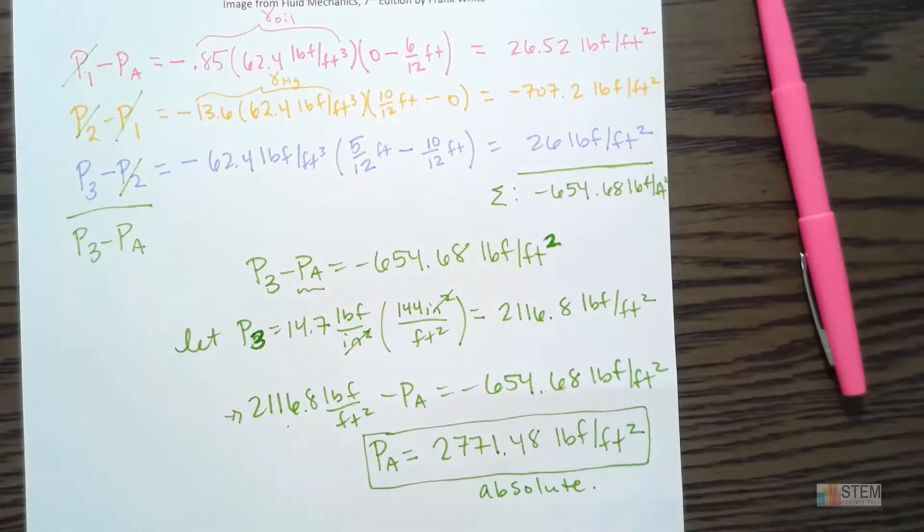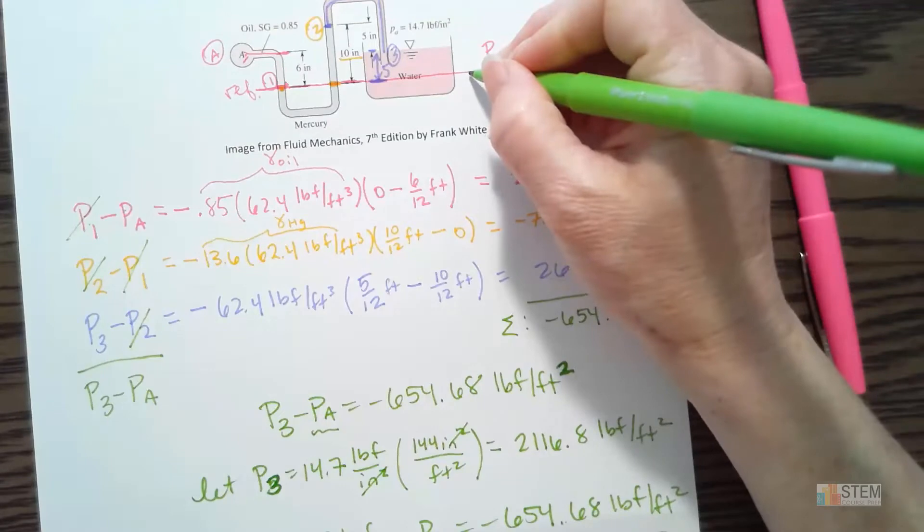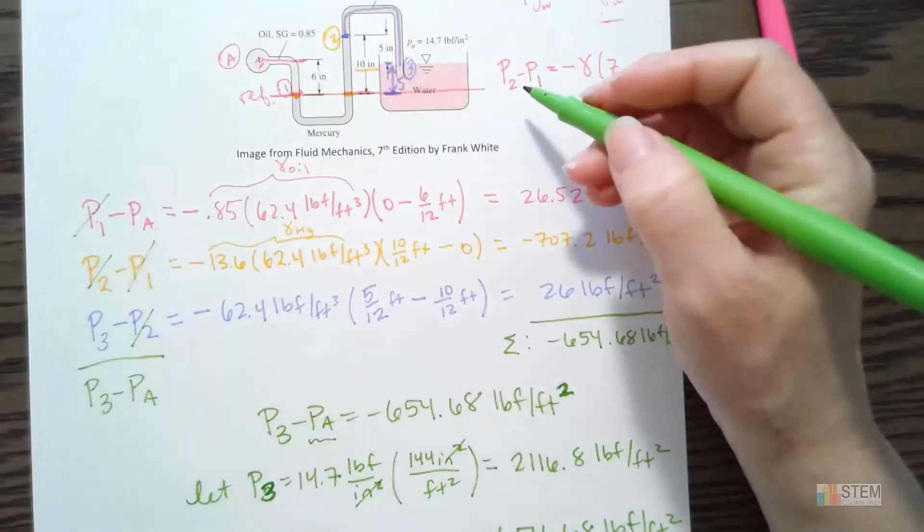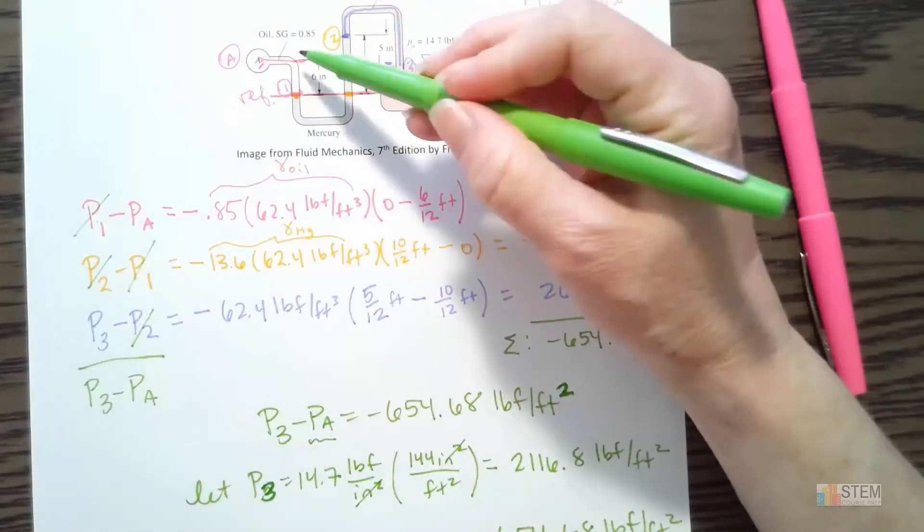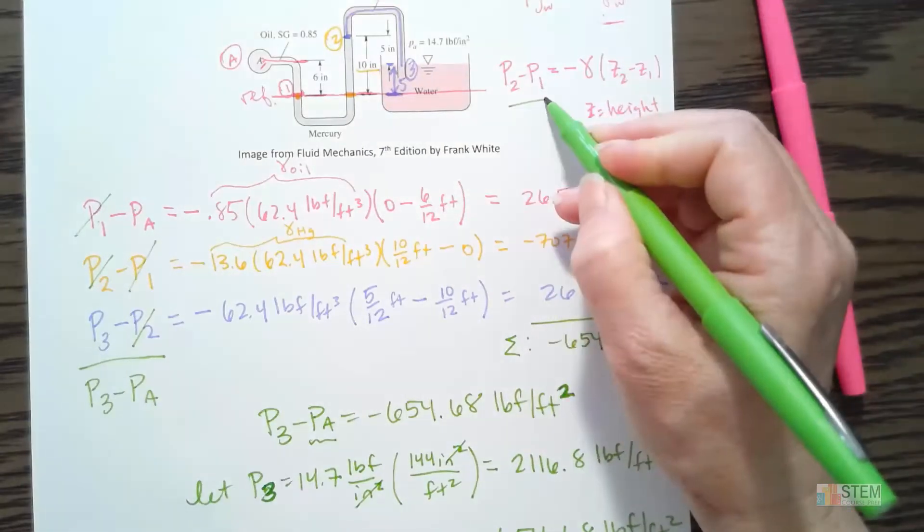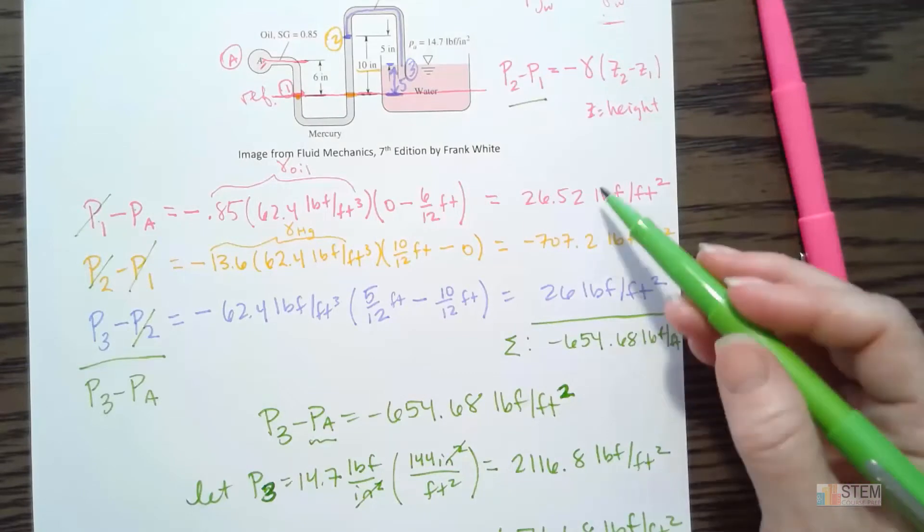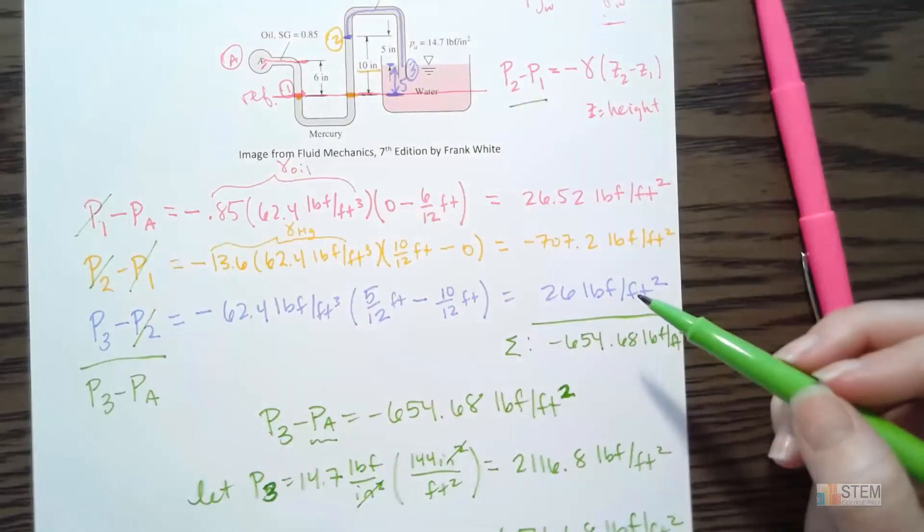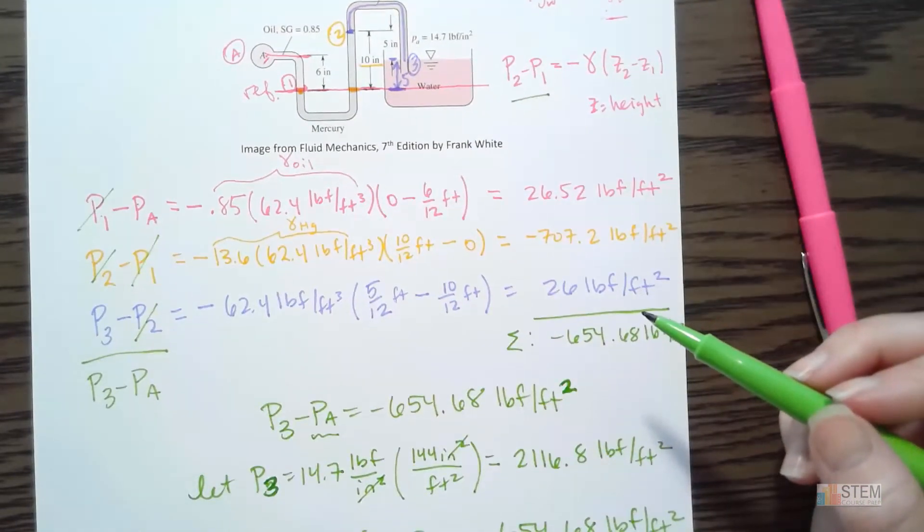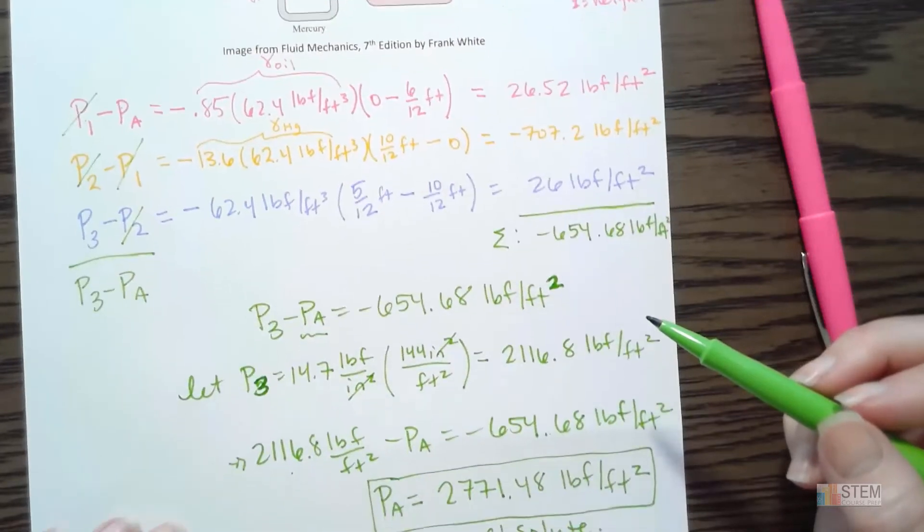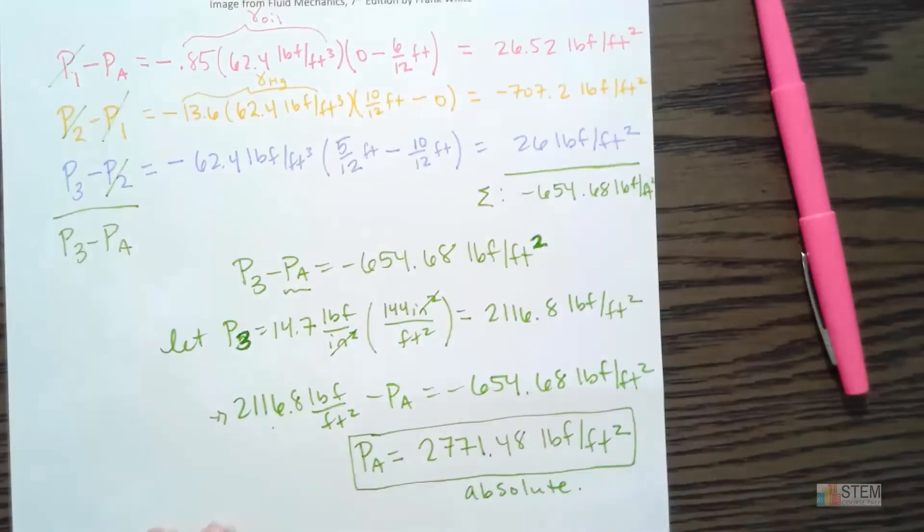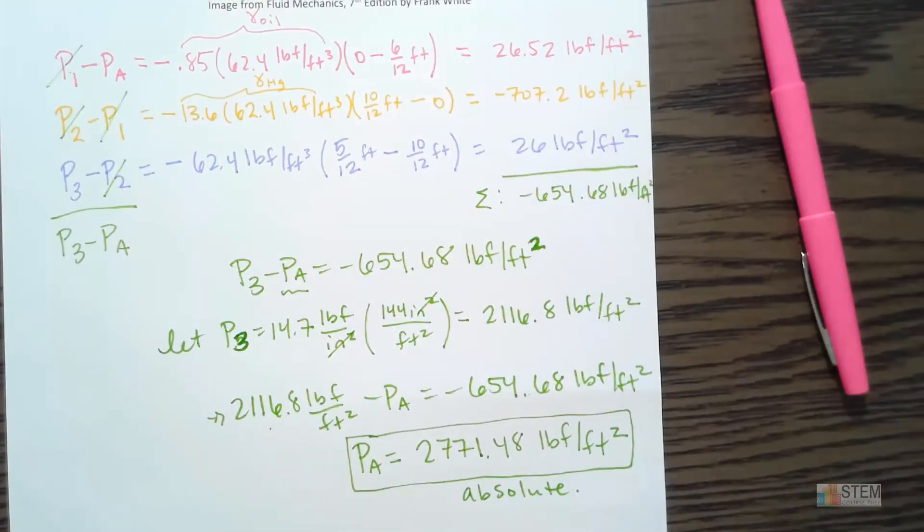Alright. Hopefully that one made sense. And that's kind of how you do these manometer problems. First thing you want to do, pick your reference line. Then just work your way around the tube. Do this equation for each of the different liquids or substances. And then sum up your left column, your right column. And then go from there. Alright. To get what you need. So hopefully that was helpful. I hope you all have a great rest of the day. I will see you all next time.